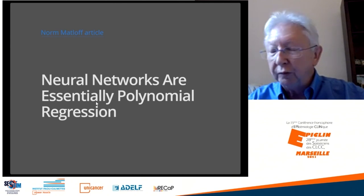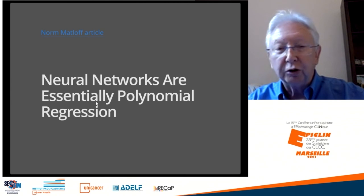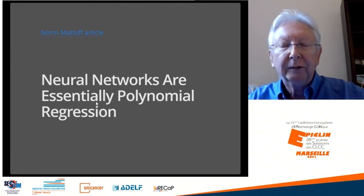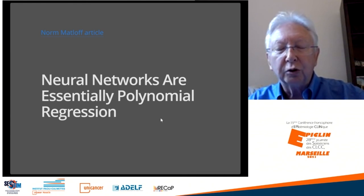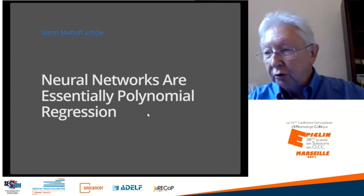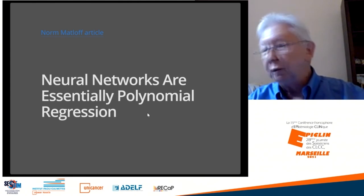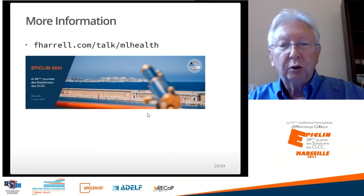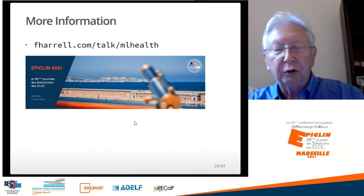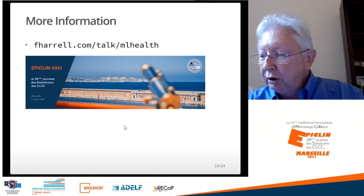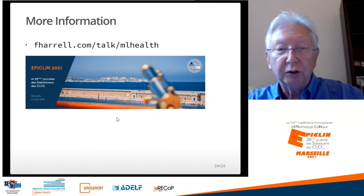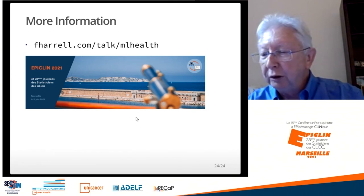Norm Matloff, who is trained as both a computer scientist and a statistician, wrote a provocative but very interesting article showing that neural networks are essentially polynomial regression — and he even showed some advantages that polynomial regression has over machine learning because of certain simplifications and penalizations that are more natural to apply. I appreciate your listening, look forward to questions, and the link to the slides has links to the blog articles and other material. Thank you for inviting me, and I hope you find the material interesting, useful, or both.